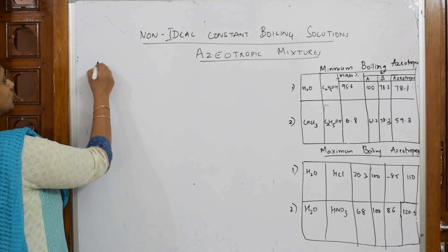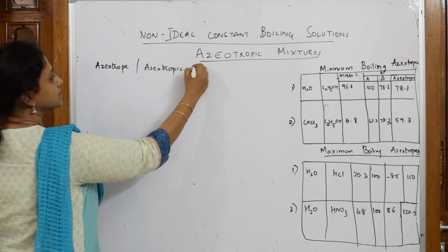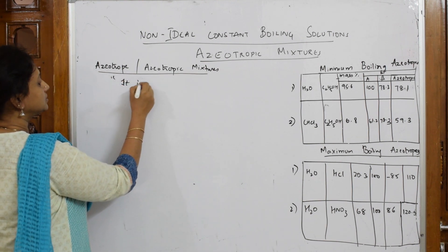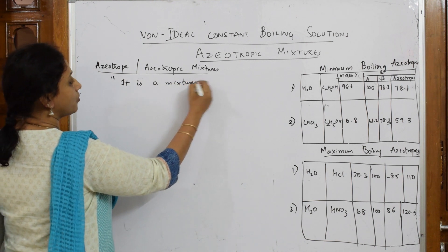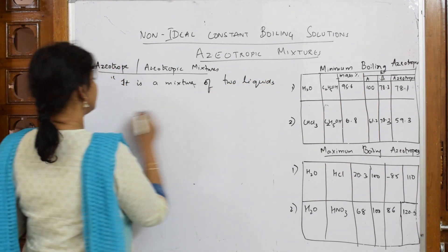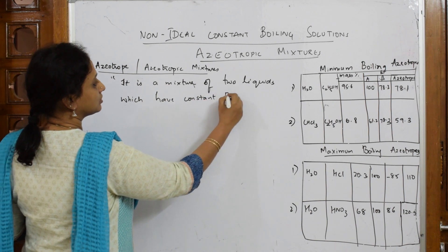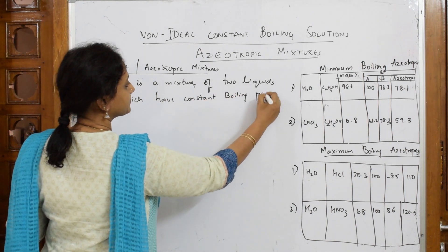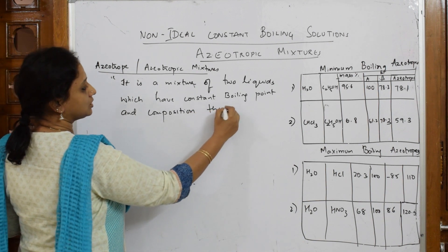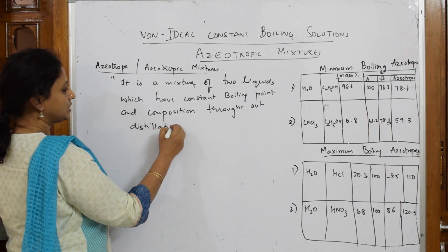Let us define it. An azeotrope, or azeotropic mixture, is a mixture of two liquids which have a constant boiling point and composition throughout distillation. Let me explain this — this definition is for your examination.